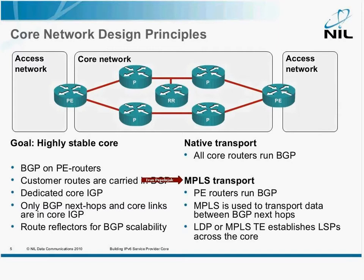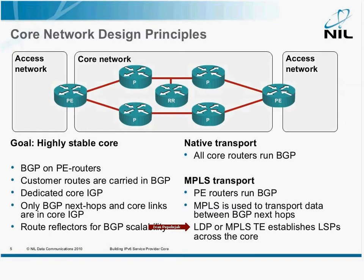On the other hand, if you use MPLS as the transport mechanism between the PE routers — and it doesn't matter whether you run MPLS VPN or just pure internet access — in both cases, you can use MPLS to transport data between PE routers. Then only the PE routers have to run BGP. Between them, you use MPLS label switch paths, and you establish those label switch paths with LDP or with Traffic Engineering.